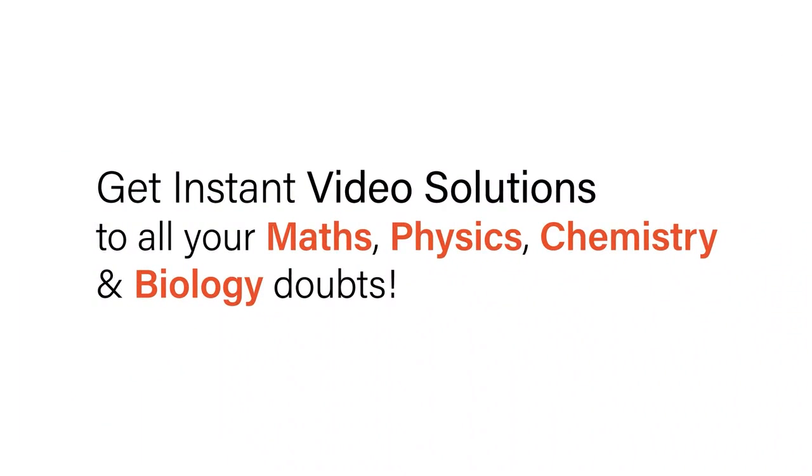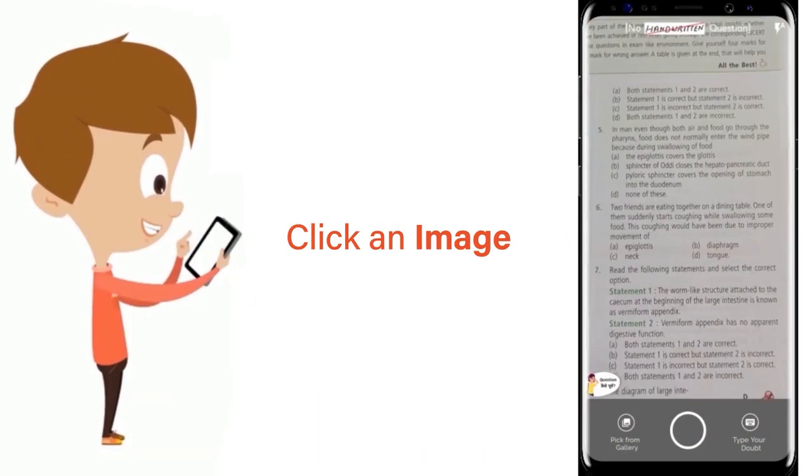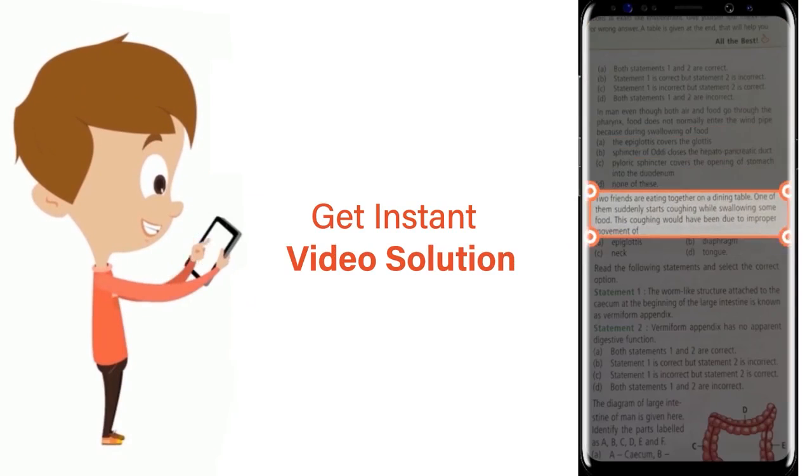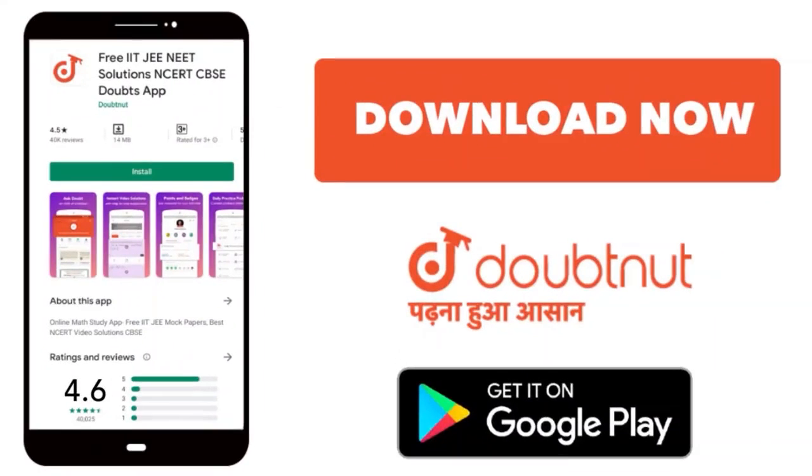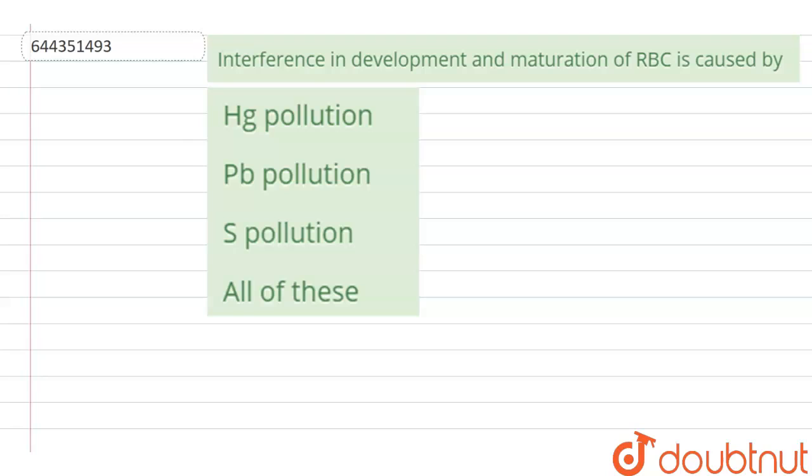With DoubtNet, get instant video solutions to all your maths, physics, chemistry, and biology doubts. Just click the image of the question, crop the question, and get instant video solution. Download DoubtNet app today. The question given here is: interference in development and maturation of RBC is caused by, and the options are Hg pollution, Pb pollution, S pollution, or all of these.